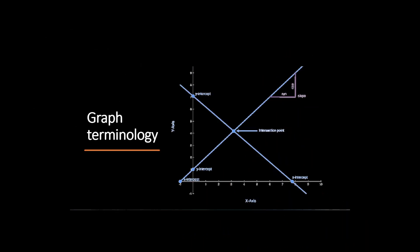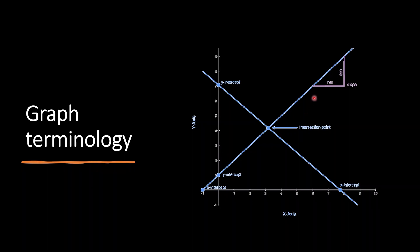In order to understand how to construct a simple graph that shows the relationship between two variables, first we should learn a few important terms used in graphs. The point where two lines on a graph cross is called an intersection point. An intercept is where a line on a graph crosses the x-axis or the y-axis. The x-intercept is the value of x when y is zero, and the y-intercept is the value of y when x is zero.